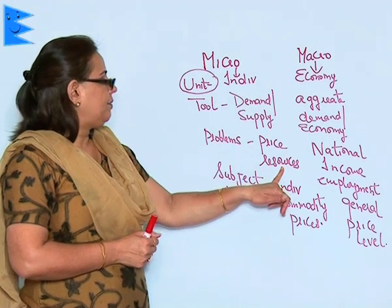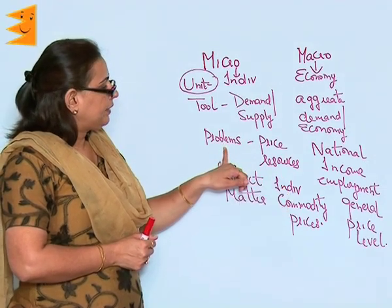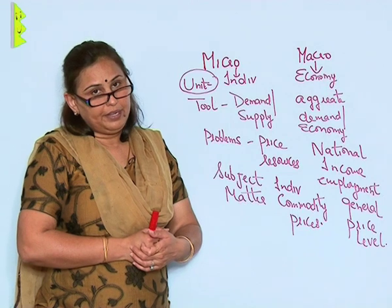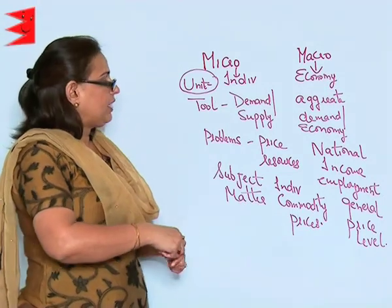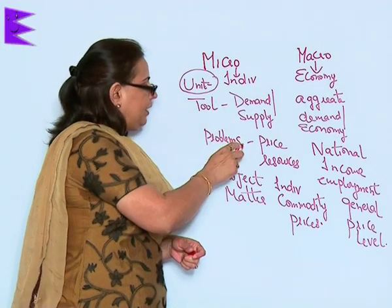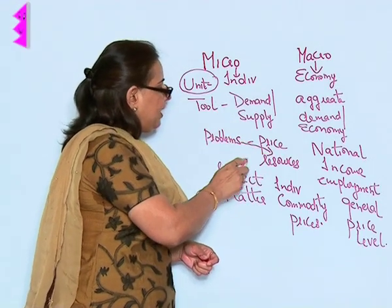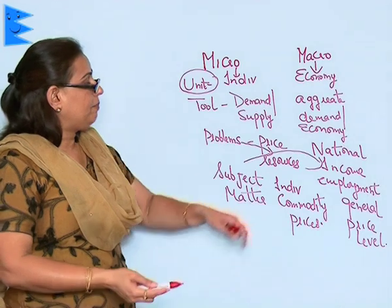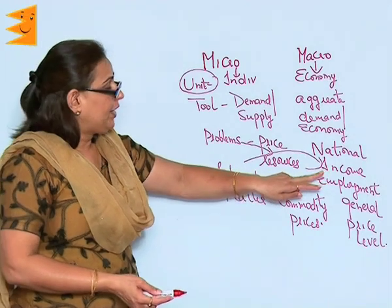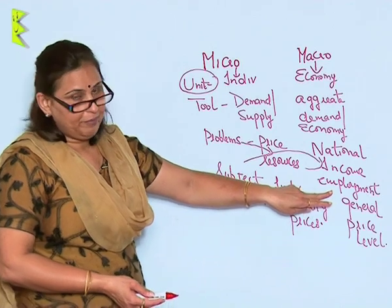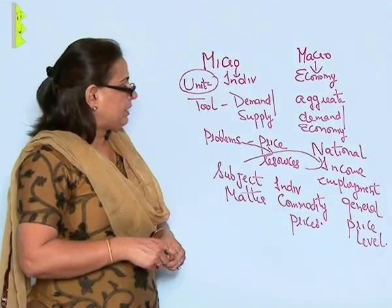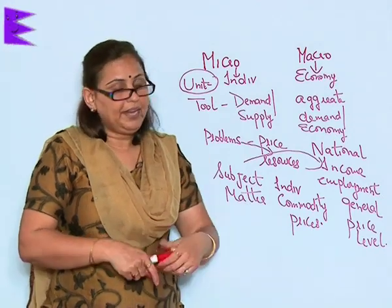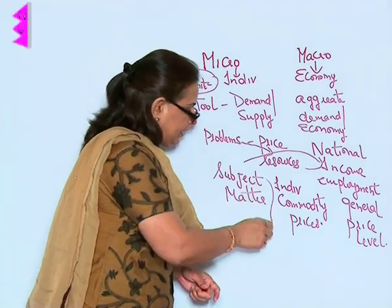When it comes to the problems of both micro and macroeconomics, in microeconomics the allocation of price and resources remains the biggest problem. In macroeconomics, national income and employment are the central concerns. The individual is concerned about prices, whereas the economy deals with generating national income, distributing it equitably, and generating employment.